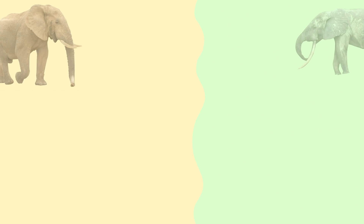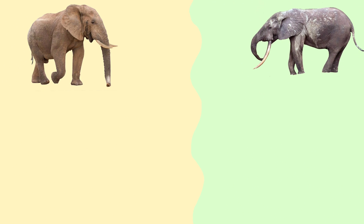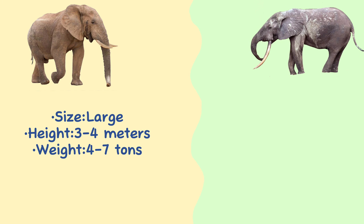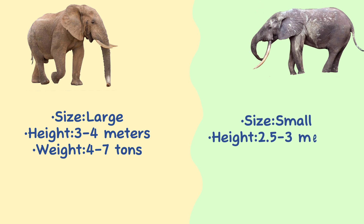Size. African forest elephants are generally smaller than African savannah elephants. The average height of the African savannah elephant is 3–4 meters and weight is 4–7 tons, whereas the average height of the African forest elephant is 2.5–3 meters and weight is 2–5 tons.